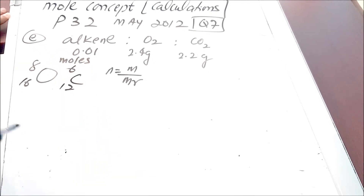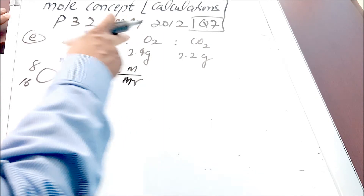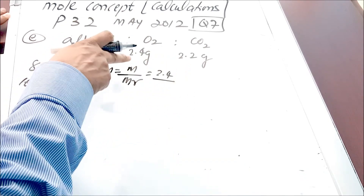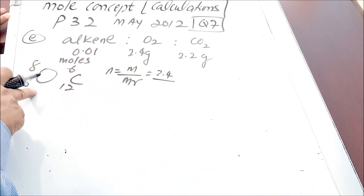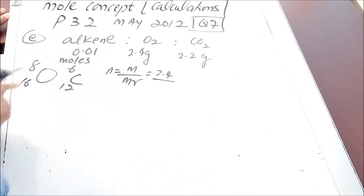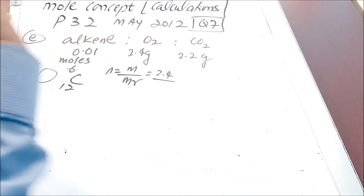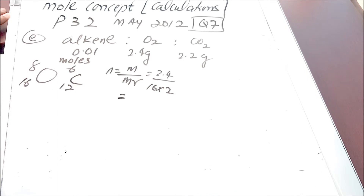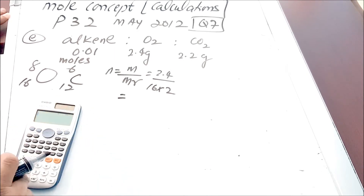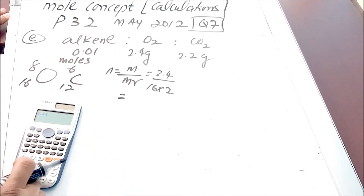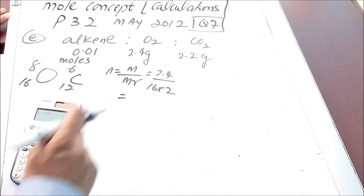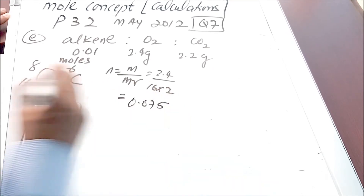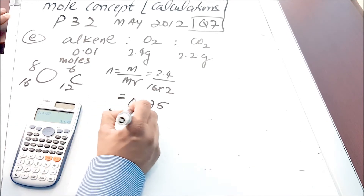The mass of oxygen given is 2.4, so I put 2.4 in the numerator. To find the MR, I look at the periodic table — the AR of oxygen is 16, but because O₂ has 2 atoms, I multiply by 2: 16 × 2 = 32. So 2.4 divided by 32 gives us 0.075 moles of oxygen.